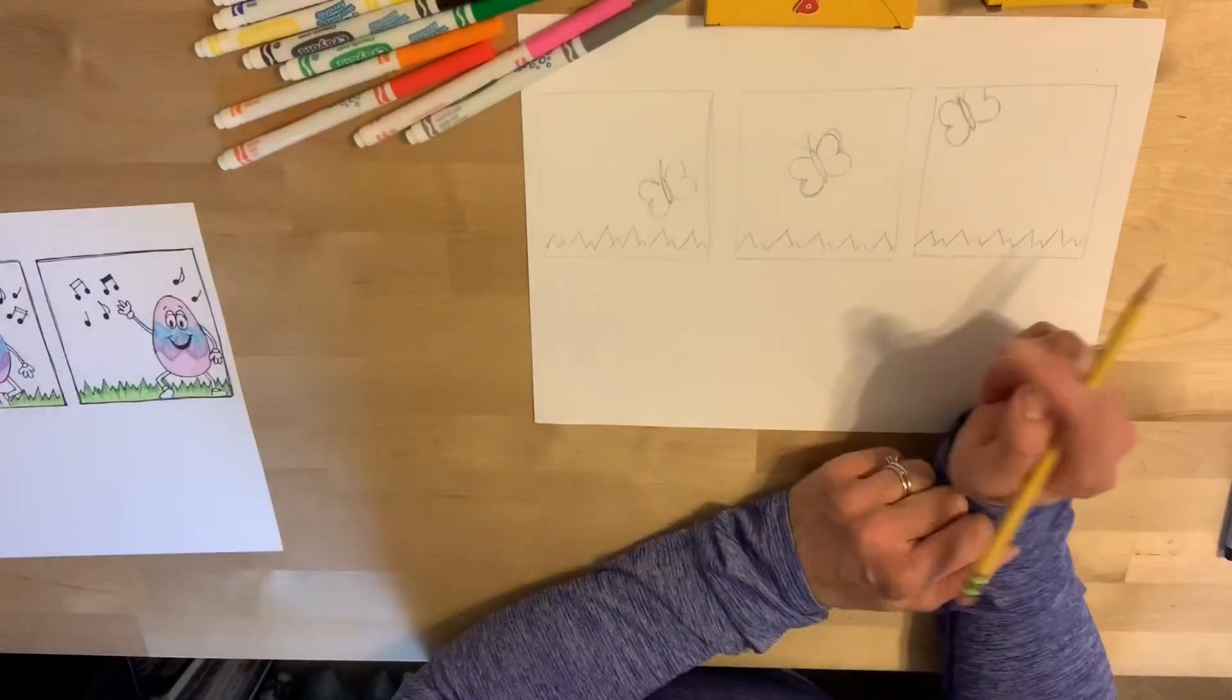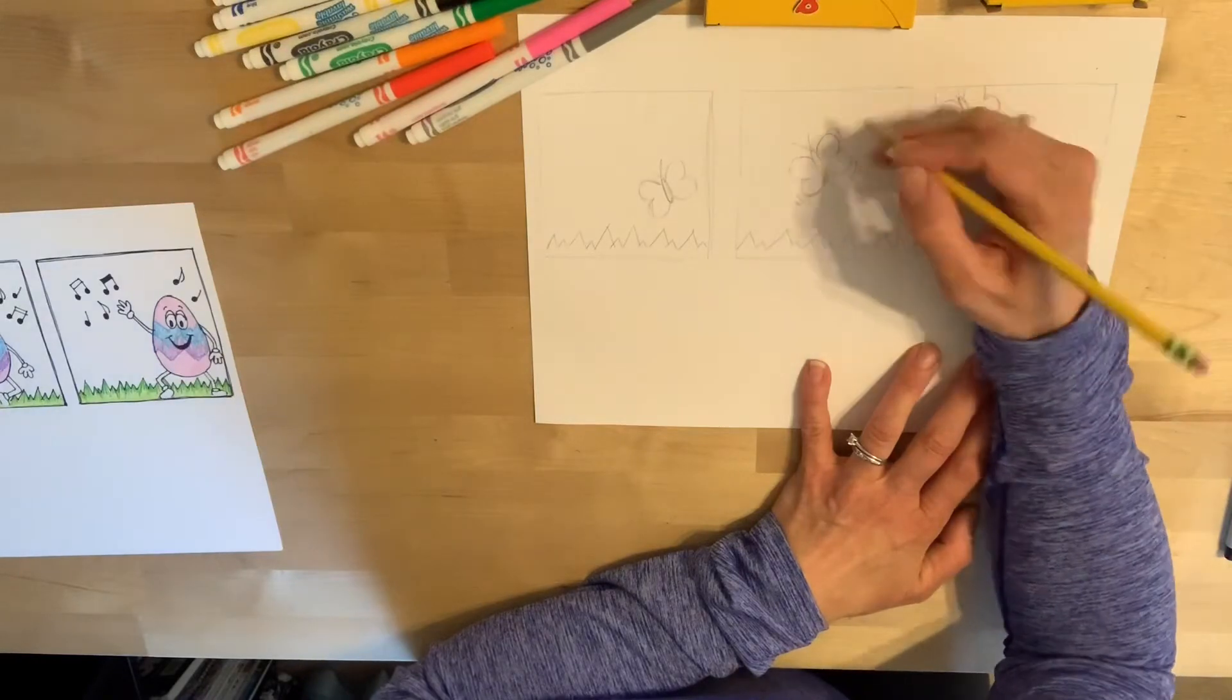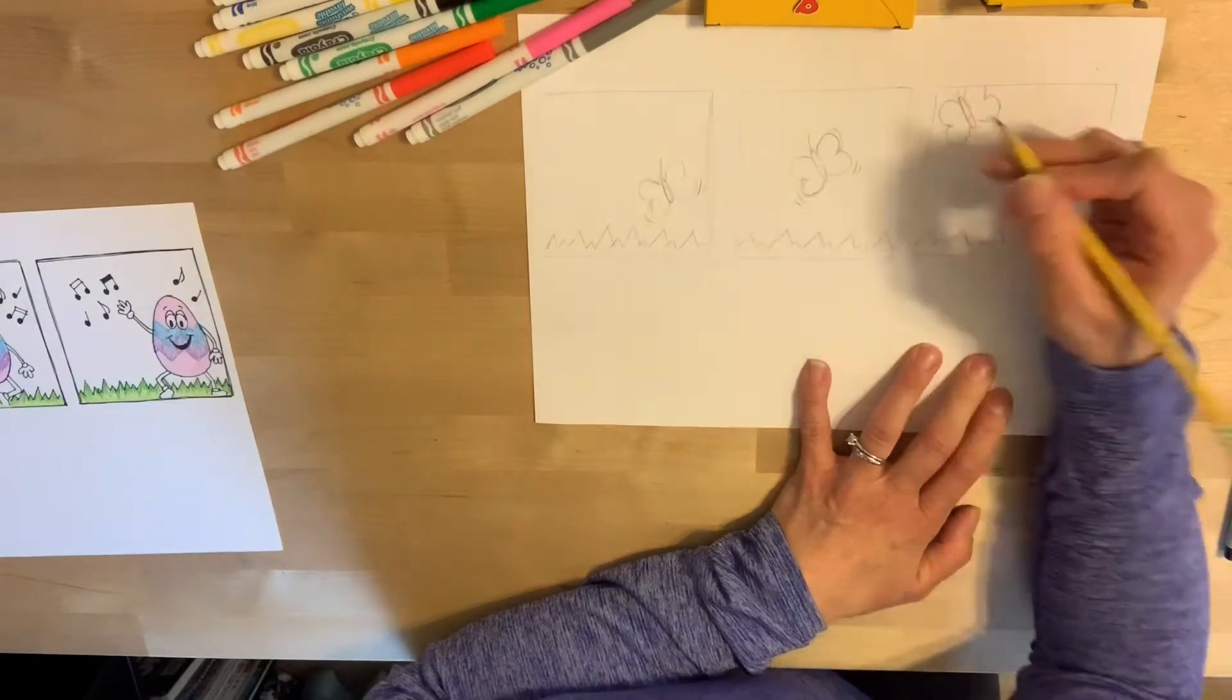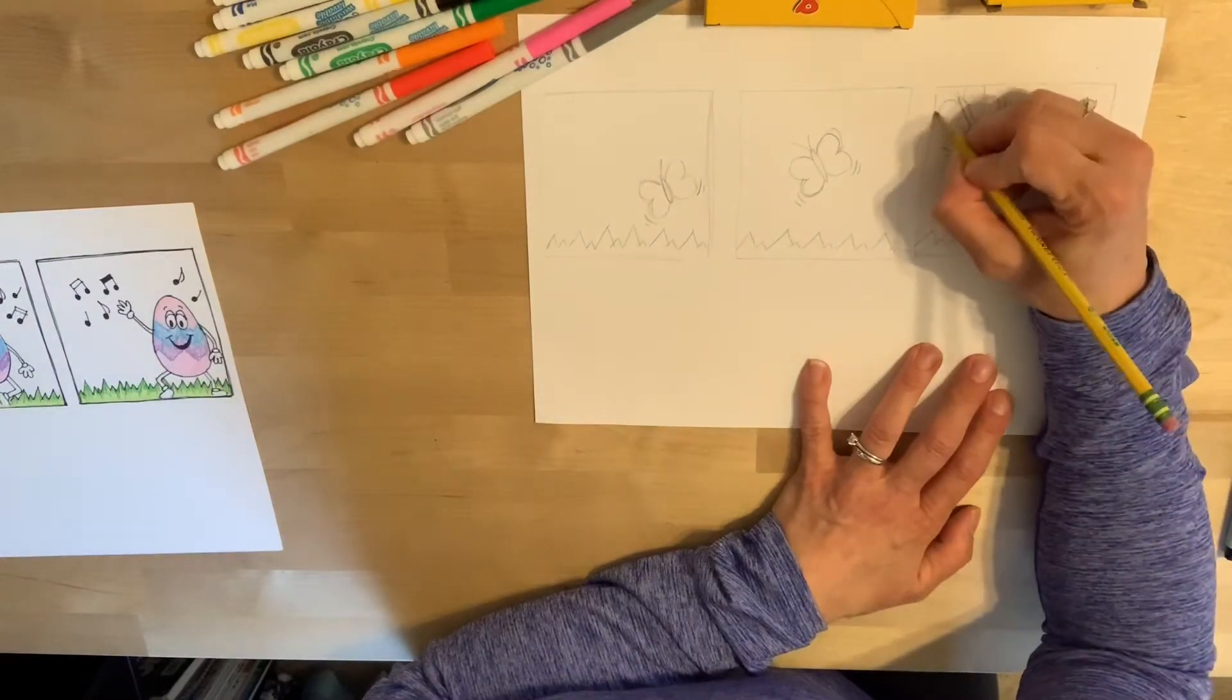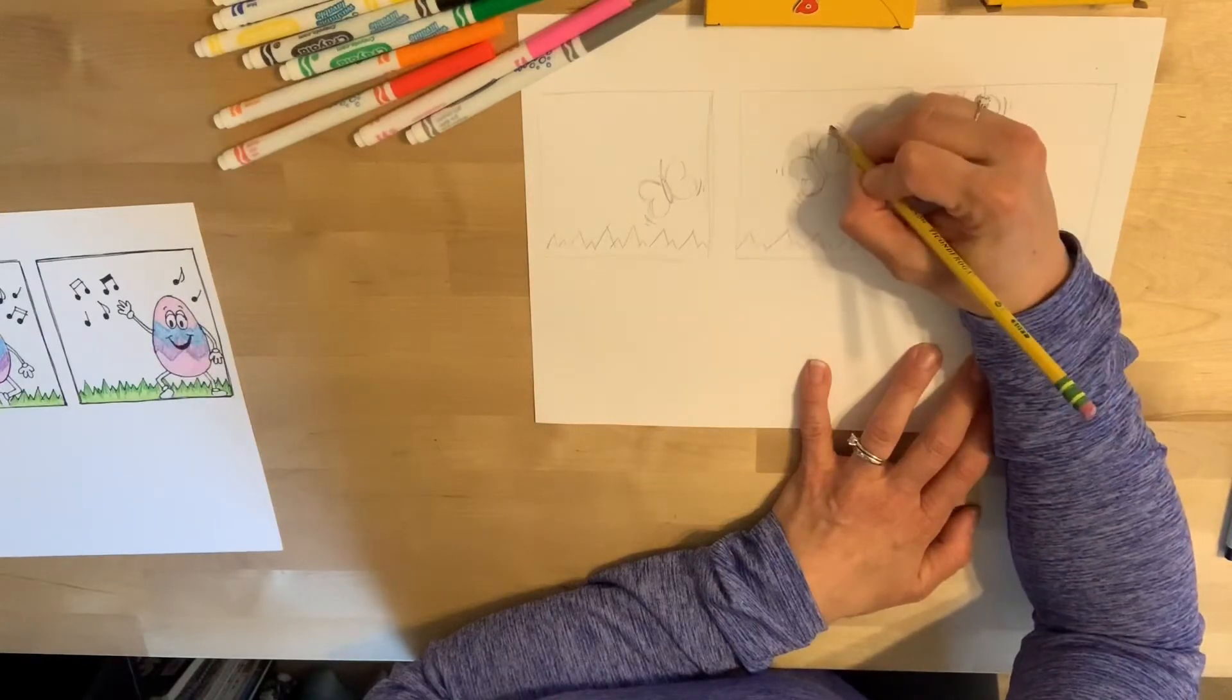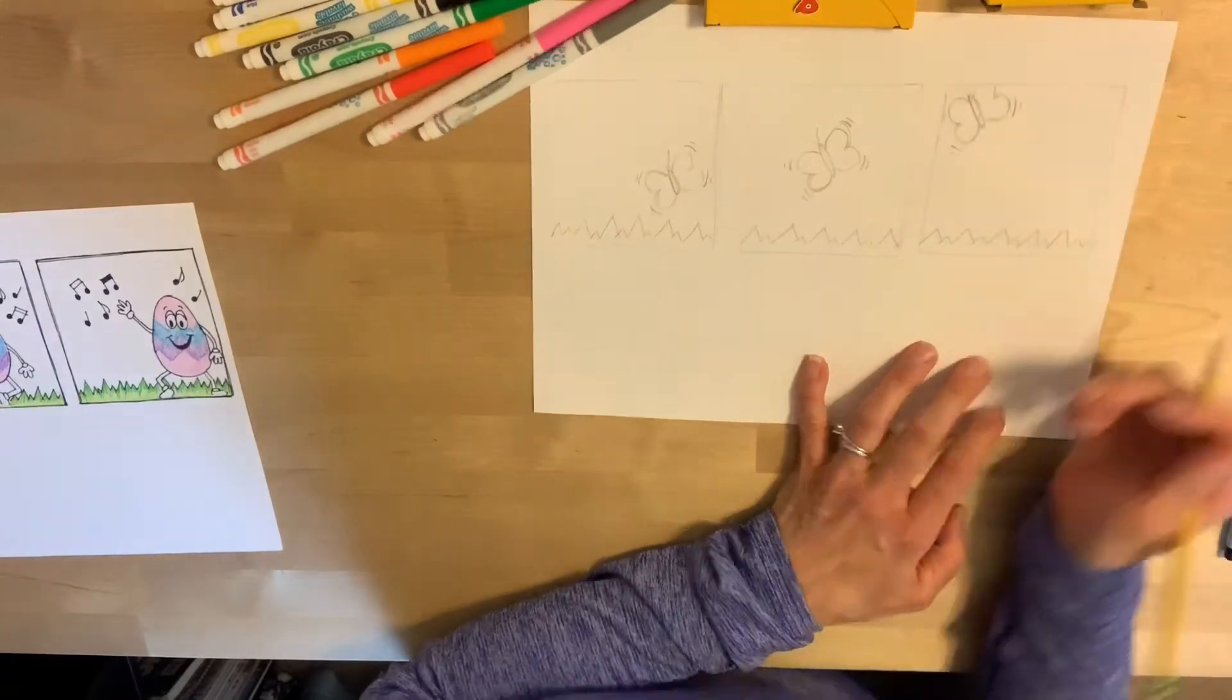For here with the butterfly flying, all I'm going to do is add some little action lines around the butterfly's wings. And it makes it look like those wings are fluttering, and the butterfly is flying.